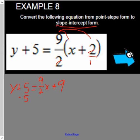Now we're going to subtract 5 from both sides to get the y by itself, because that's what y equals mx plus b slope-intercept form is. Bring 9 over 2x down, so this is our slope-intercept form.